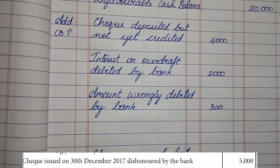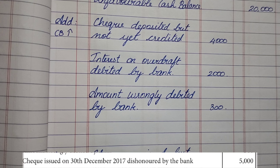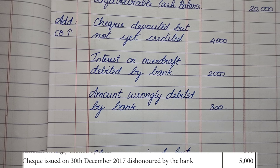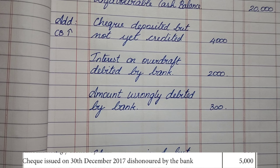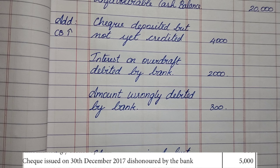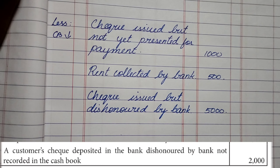Next is a check issued on 30th December 2017 that is dishonored by the bank. When a check is dishonored, we reverse the entry in the cash book — receiving the check back from the payment side. Since we have issued the check and it was dishonored, we wrote it on the payment side, so the cash book is less. Both the cash book and passbook decrease when a check is dishonored. Therefore we put this item in the Less category.